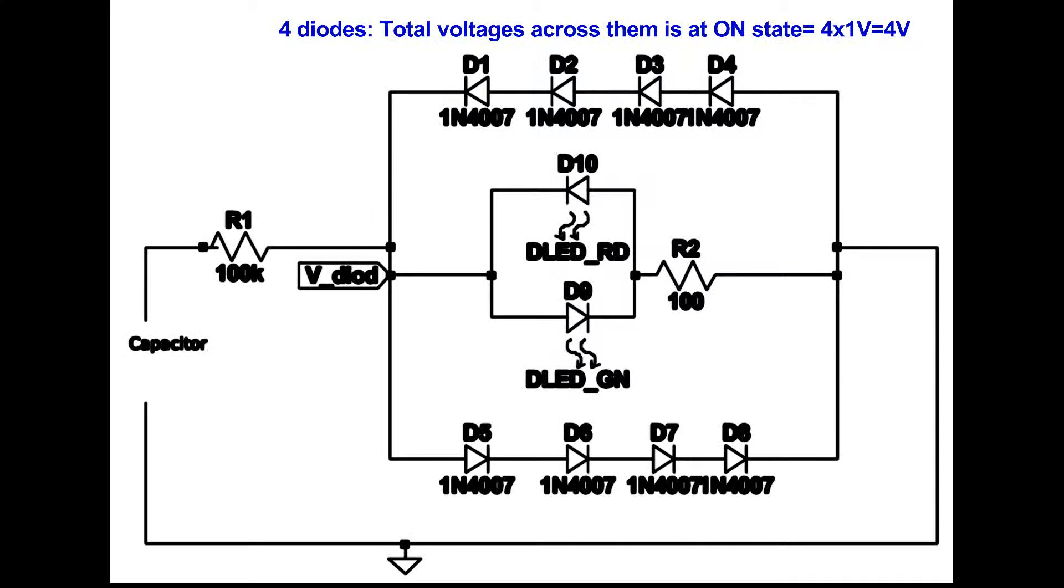The four diodes will give a voltage drop of about 4 volts, which is the voltage across the LED and the resistor, no matter how much voltage the capacitor holds.